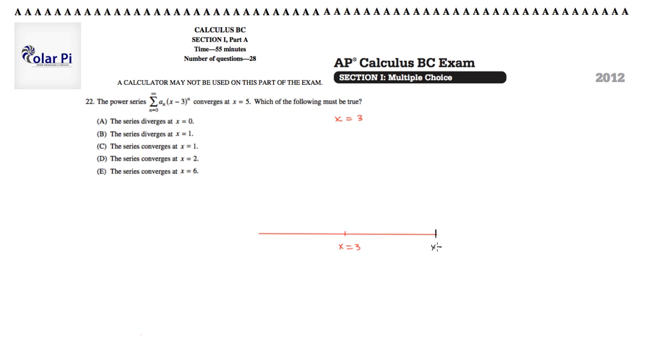Since we know that it converges at x equals 5, then the leftmost point that we're sure of convergence might be x equals 1. Now we're not sure of the convergence at x equals 1. You'll know, having done the ratio test on multiple series and power series and testing their convergence, that even if you had...